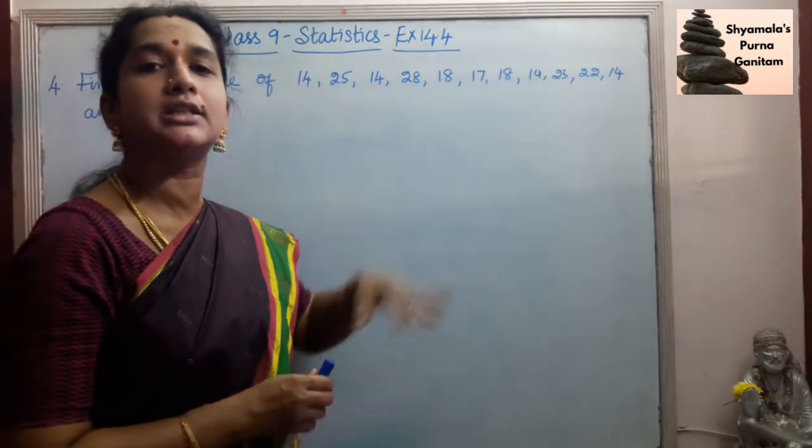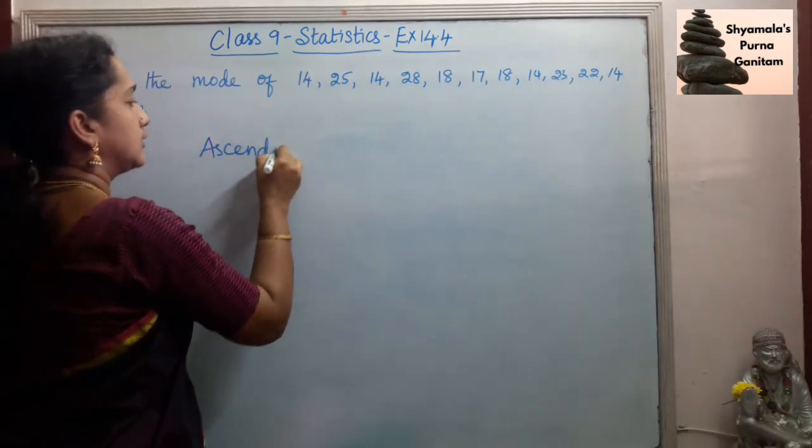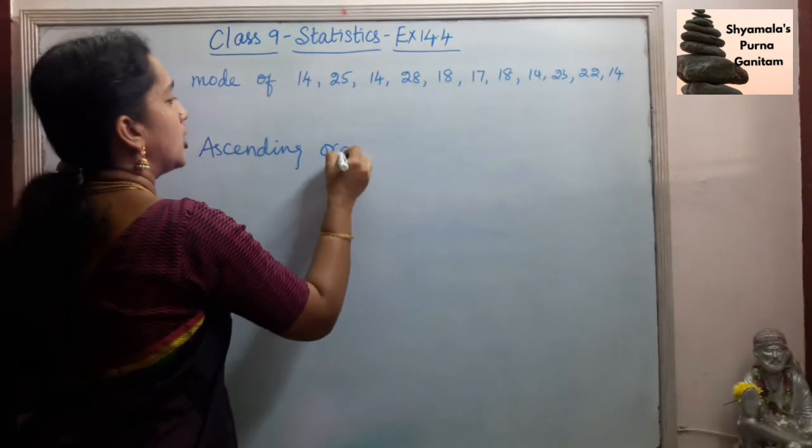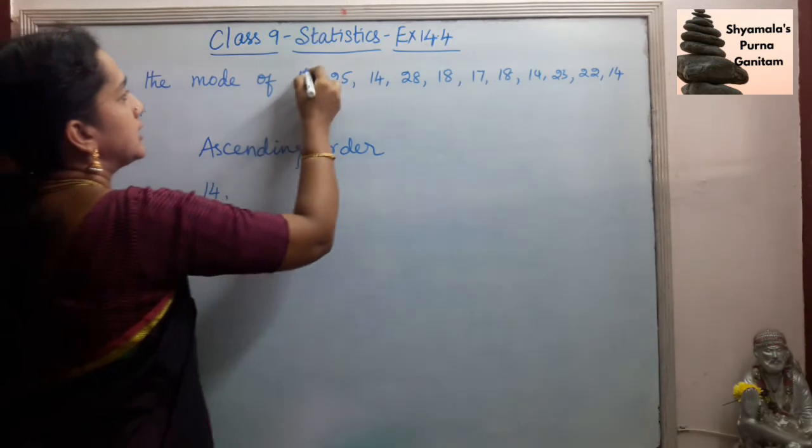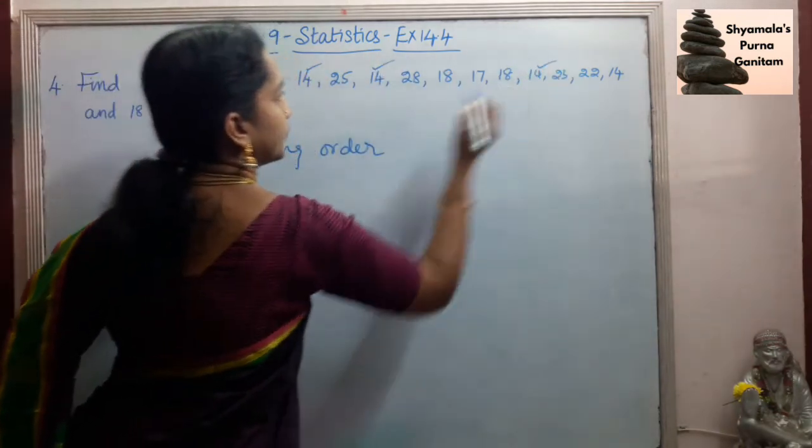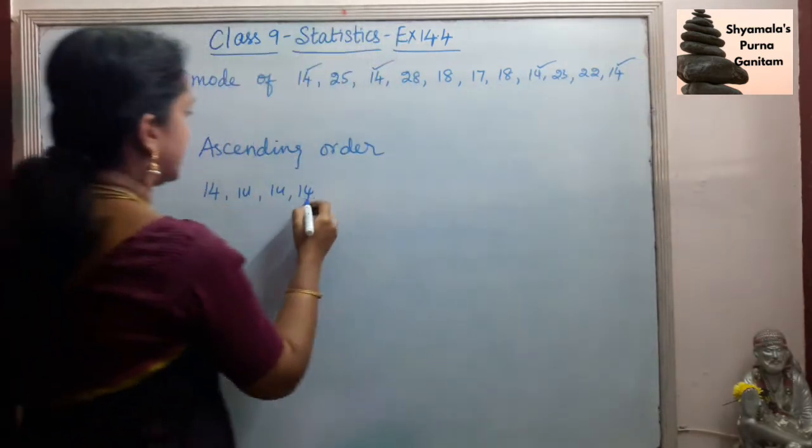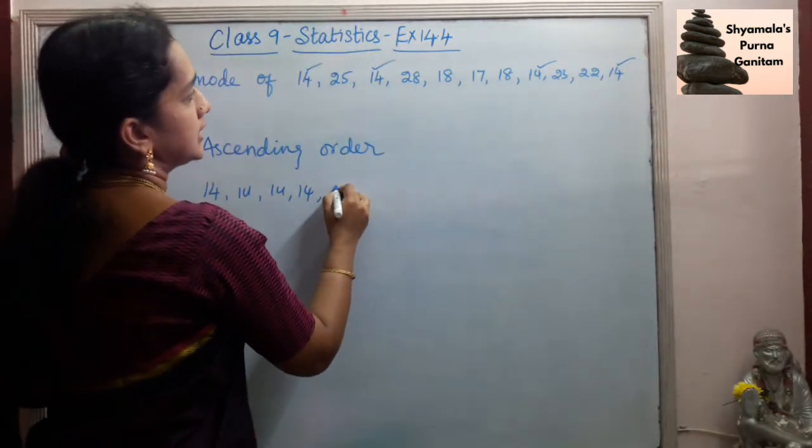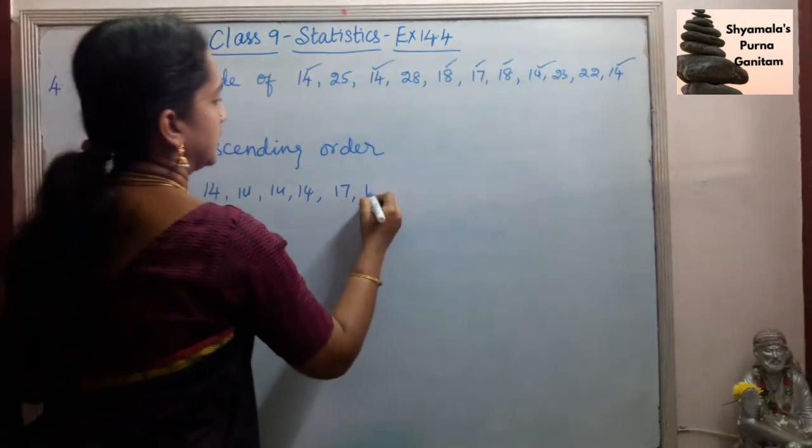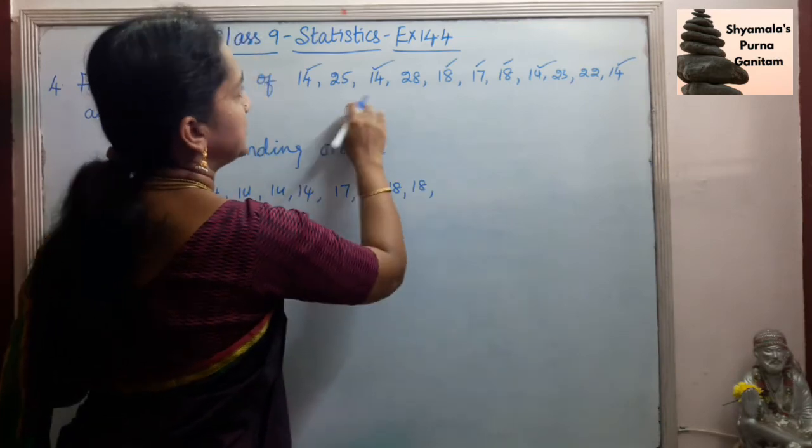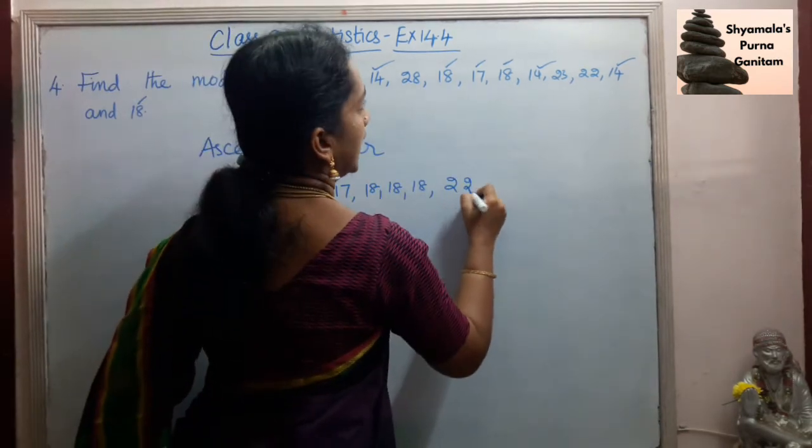So for that we need to arrange this in ascending order. Ascending order for the given data is: We will start from 14. 14 is the least one here. So 14, 14, 14, 14 - four times it is repeated. Then next one is 17. Then 18 is repeated 3 times. Then we have 22 and 23.